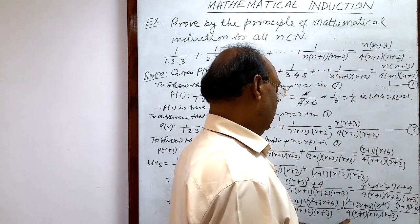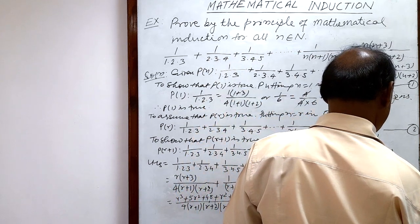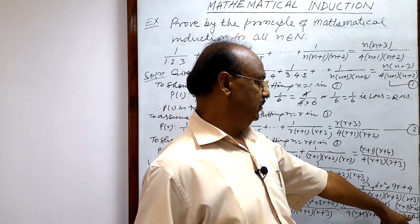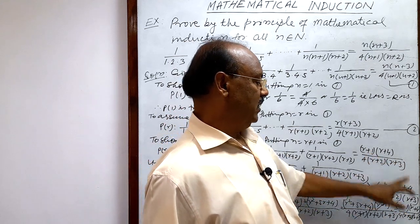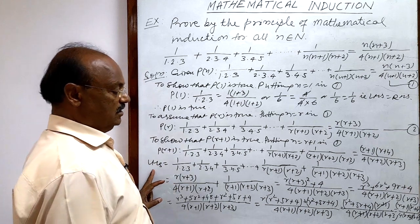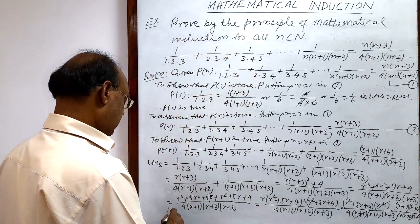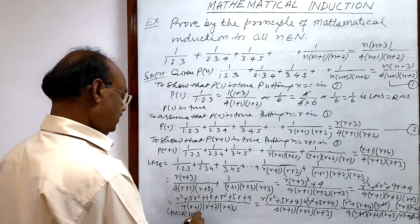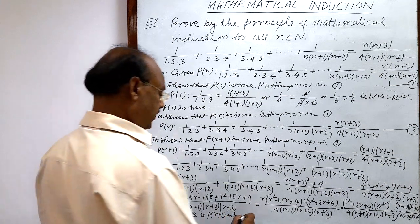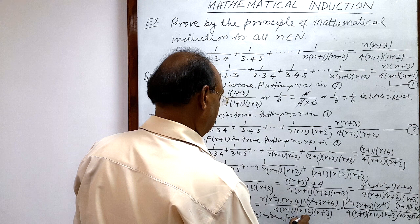This equals (r+1)(r+4) / [4·(r+2)·(r+3)], which is exactly the right-hand side of P(r+1). So LHS = RHS, meaning P(r+1) is true. Therefore, by the principle of mathematical induction, P(n) is true for all n. Proved.